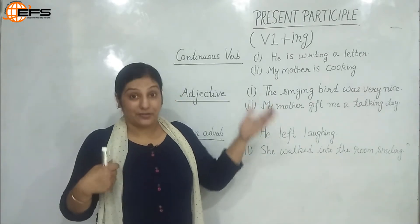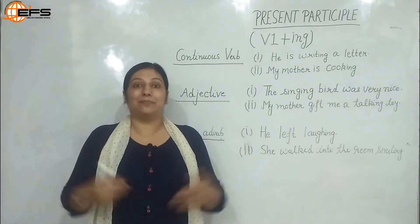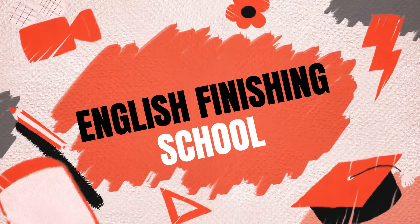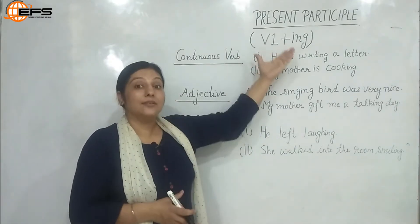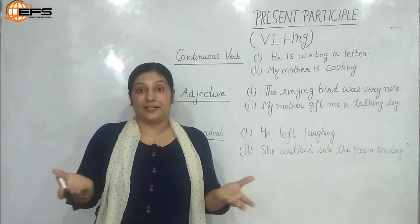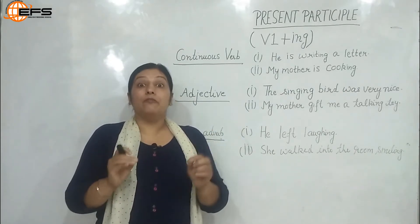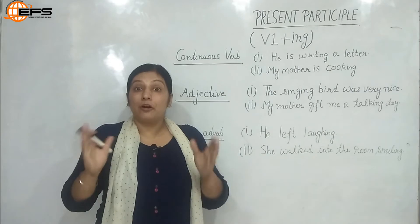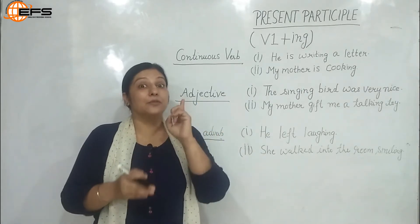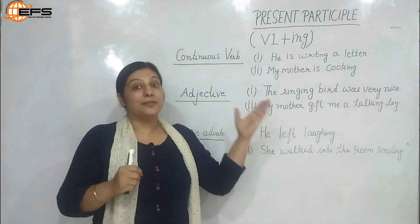In this lecture we are going to discuss in detail about the present participle, and also what is the difference between a gerund and the present participle. Present participle is a type of non-finite verb. A non-finite verb is a verb which cannot independently exist in a sentence — it always requires a finite verb, which is the main verb, to be present in the sentence.